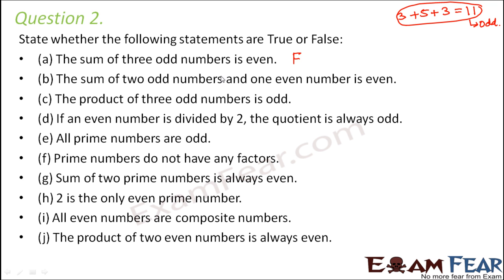The sum of two odd numbers and one even number is even. We have learned that sum of two odd numbers is always even. So even number plus even number would be even. So this is true.